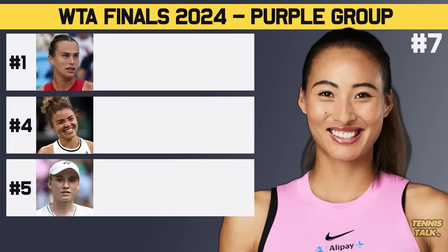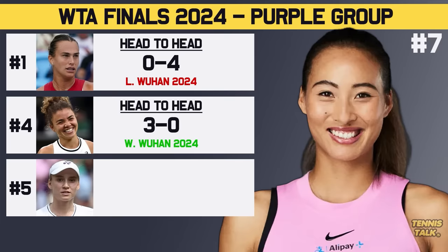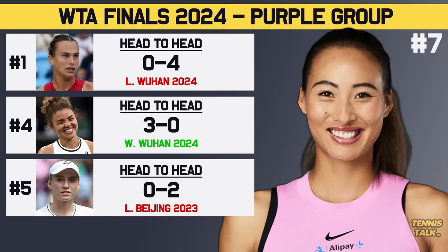Zhang against Sabalenka is 0-4 — probably the worst opponent out of the bunch for her. Against Paolini, she's 3-0, so you'd expect her to win that one, considering they just played a couple of weeks ago with Zhang getting the win. And then against Rabakina, it's 0-2 in favor of Rabakina, but they haven't played in over a year, and Zhang has been really good over the last couple of months where Rabakina hasn't played much since Wimbledon.